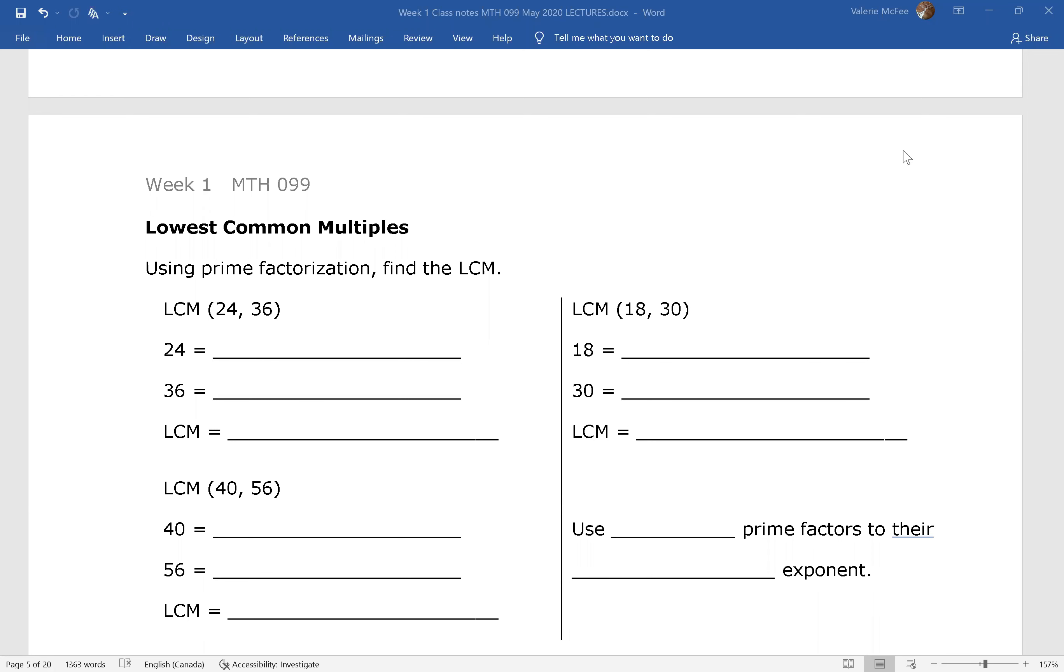Let's find the lowest common multiple of 24 and 36 using prime factorization. 36 is 2 squared times 3 squared. Okay, we need all of 24. So that means I need 3 factors of 2 and 1 factor of 3. Now let's look at 36. It needs 2 factors of 2. I already have 2 factors of 2. That's good. I need 2 factors of 3. 8 times 9. The lowest common multiple is 72.